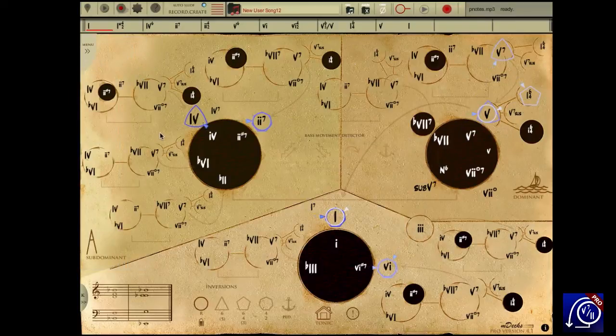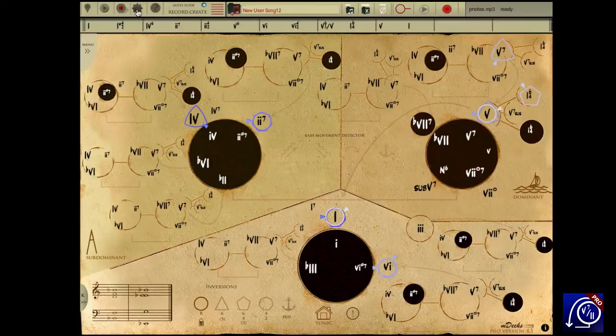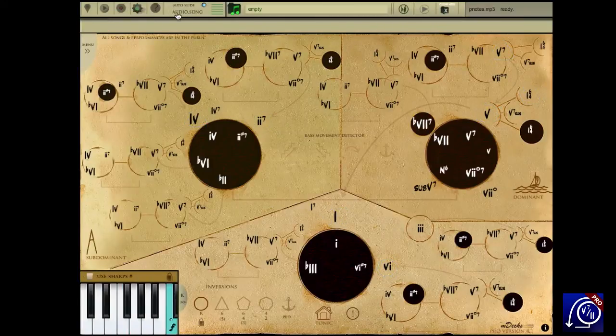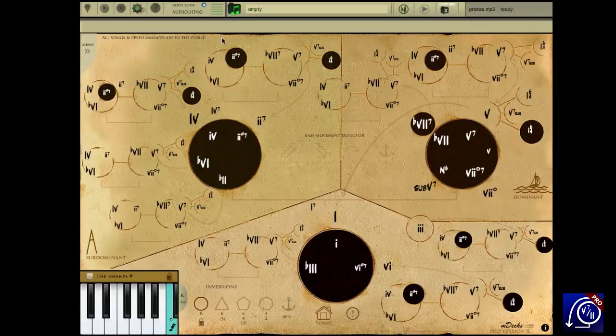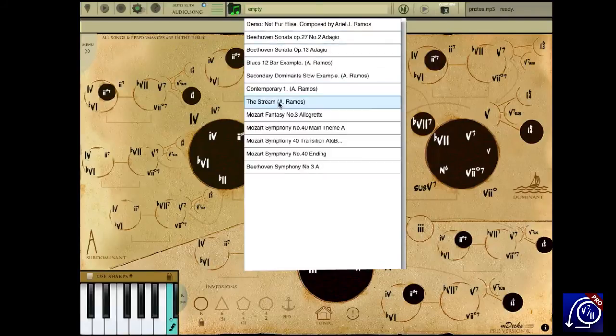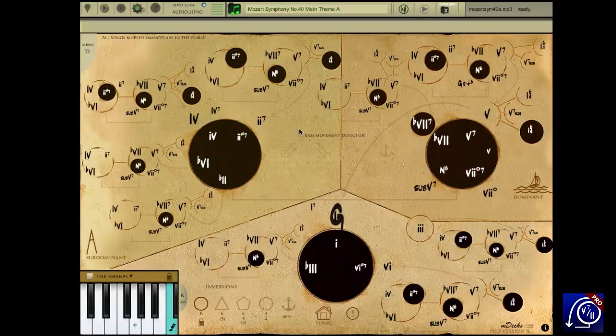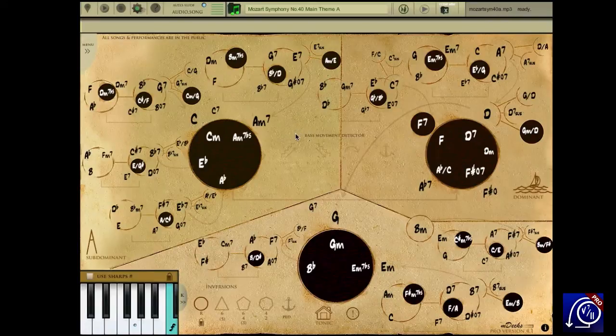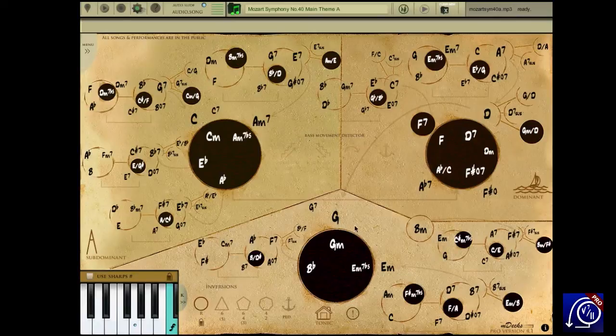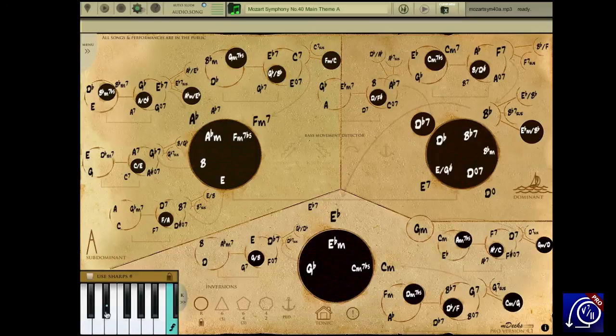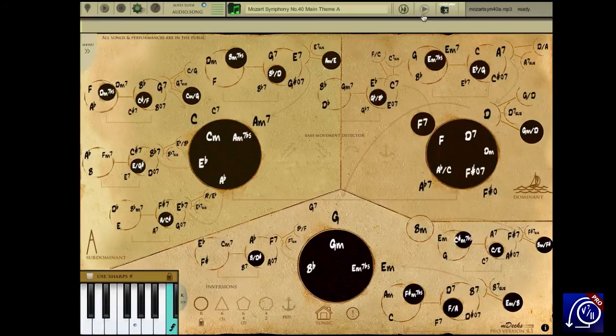Finally, let's load an audio song from the server and view it in play on the map. All songs and performances included in this list are in the public domain. Let's load the wonderful and well known main theme from Mozart's Symphony No. 40. The key has now changed to G minor. Of course, you can view it in any other key if you want to. For example, in E flat. If you want to go back to the original key, just tap on this button here. Okay, we are back in G minor.